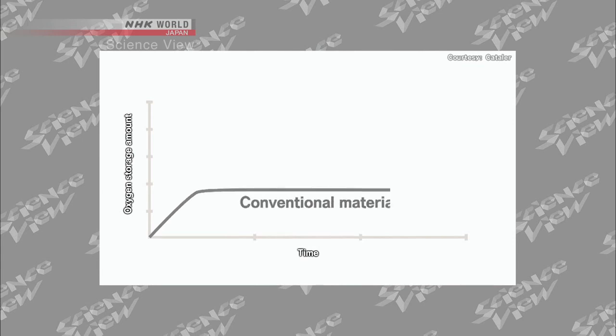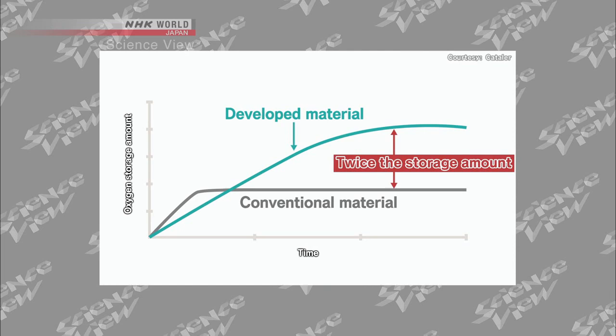Conventionally, after a certain period of time, it became less efficient. But as a result of the improvement, the oxygen was stored at a slower pace, making it possible to absorb approximately twice as much as before.